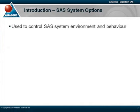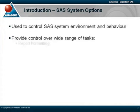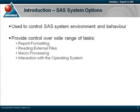SaaS system options enable us to control different aspects of our SaaS system's environment and behaviour. They provide us with the capability to control a wide range of different functions, which include the ability to format and control the orientation of our reports. We can also use them to help us read in external files, switch on usage statistics, interact with elements of macro language — for example, switching on debugging options — and there are even SaaS system options which enable us to interact with the operating system.